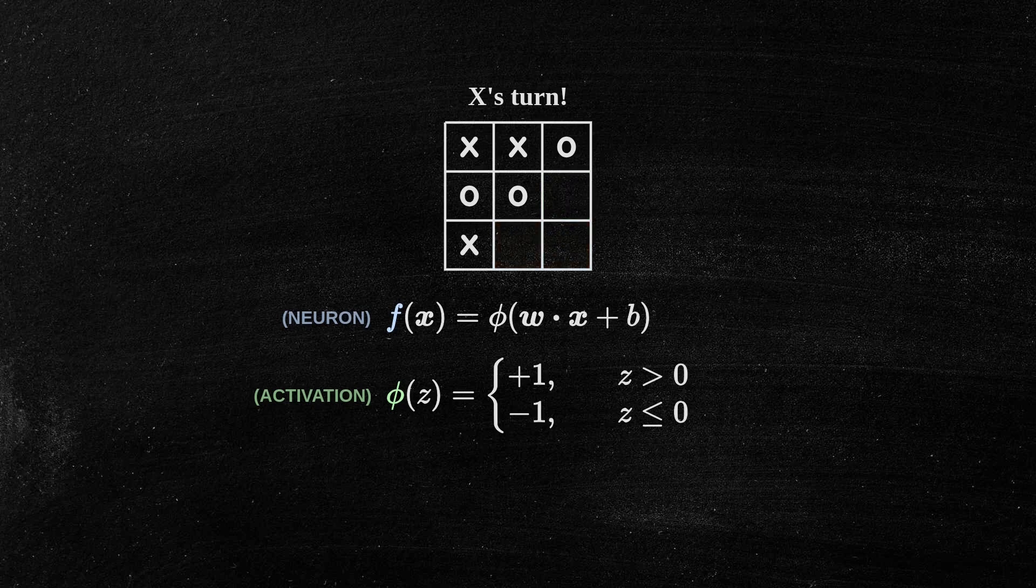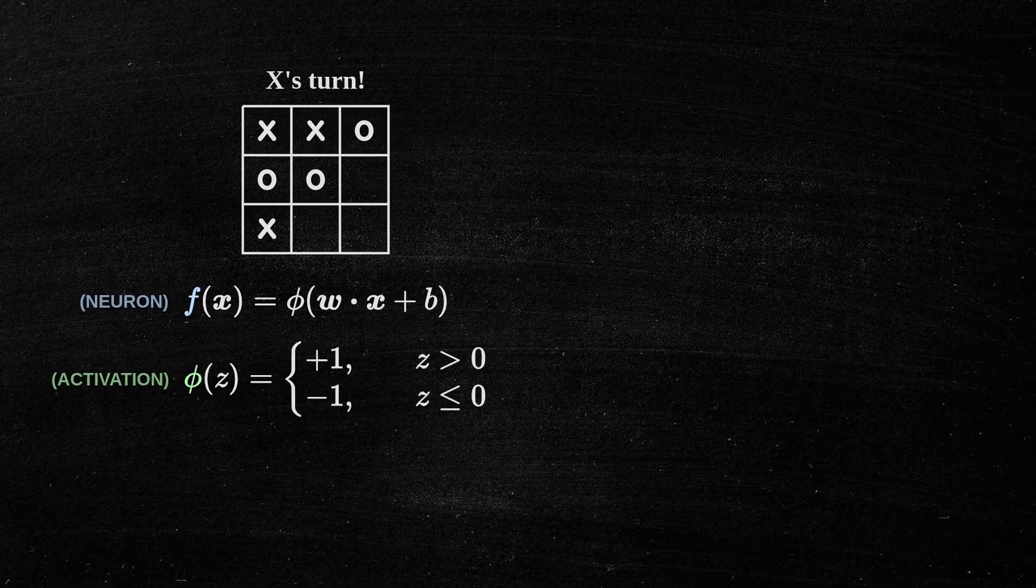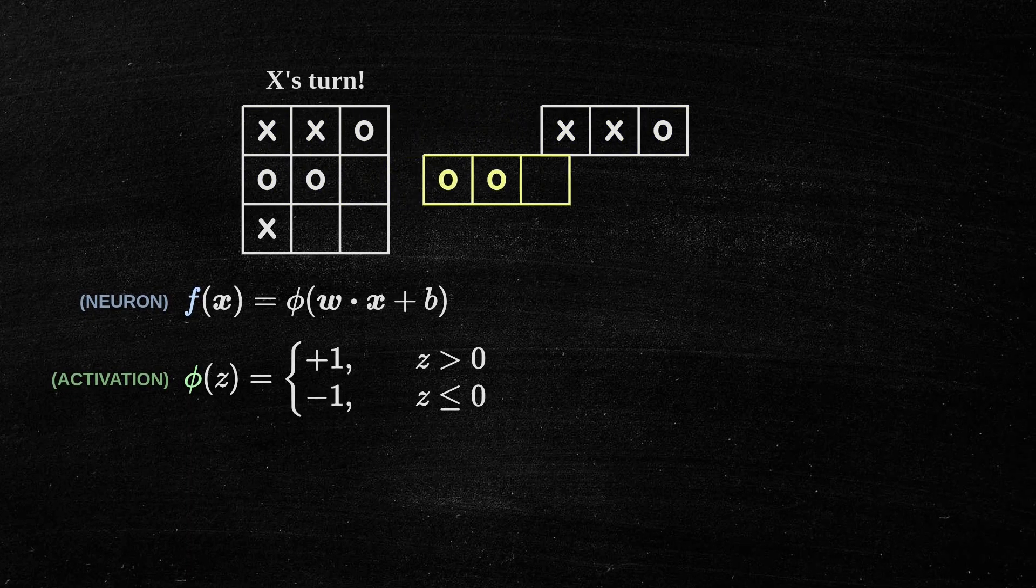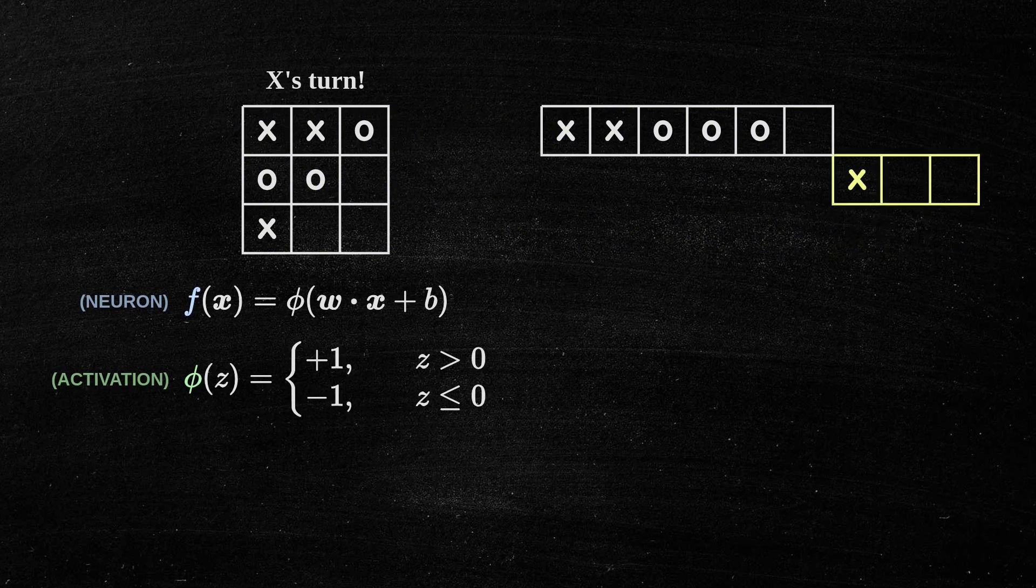Firstly, the perceptron neuron is simply a function. And like any function, it receives an input and returns an output. In this case, the input is the current game state, which is encoded as a vector with the following numbers for each cell.